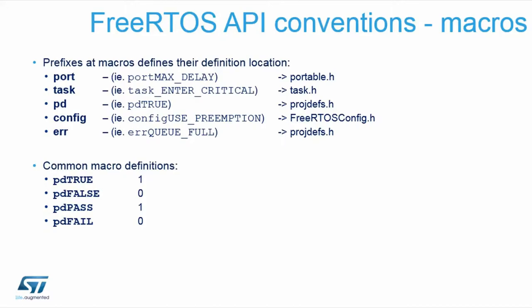Further, it gives you macros. The macros are constructed so that the first part of the macro defines the file where such macro is defined. For example, if it begins with PD, it is defined in the project definitions. There are also macro definitions for common return values and parameters like true, false, pass, and fail.